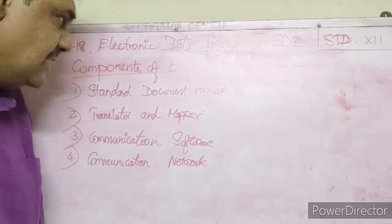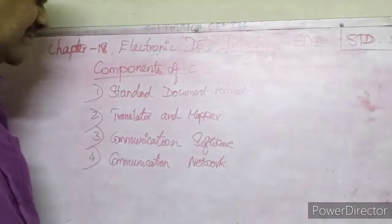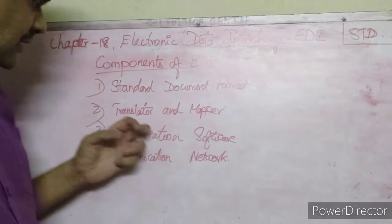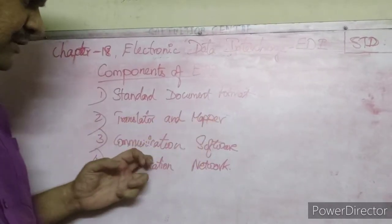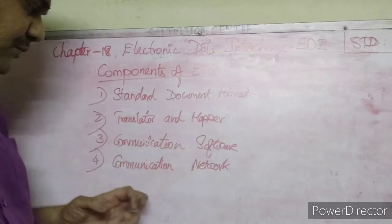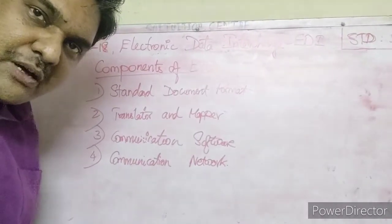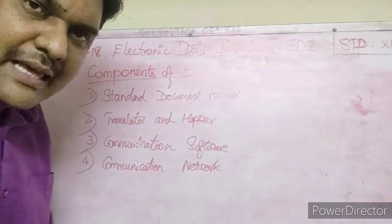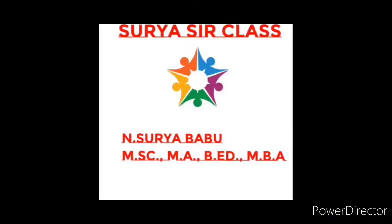These are the components of EDI: Standard Document Format, Translator and Mapper, Communication Software, and Communication Network. Remaining things we will see in the next class. Thank you.